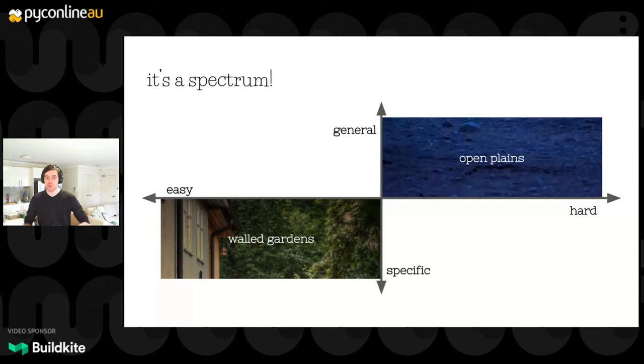When we're looking at open plains and walled gardens, we've got walled gardens that are in the easy and specific corner, and we've got open plains which are in the general and hard corner.